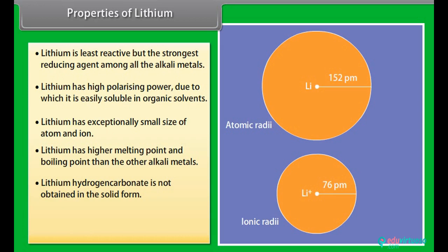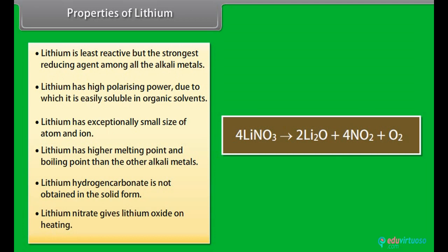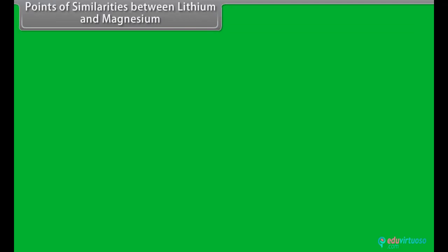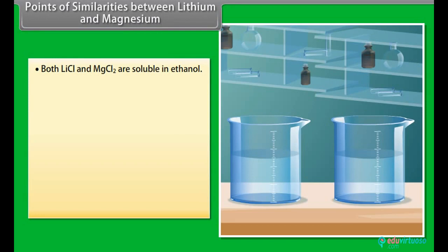Lithium has higher melting point and boiling point than the other alkali metals. Lithium hydrogen carbonate is not obtained in the solid form. Lithium nitrate gives lithium oxide on heating.